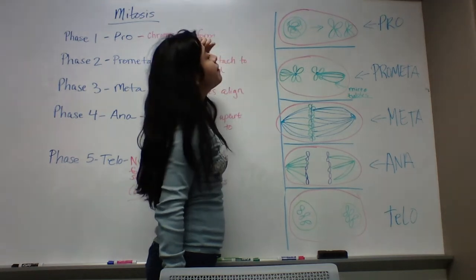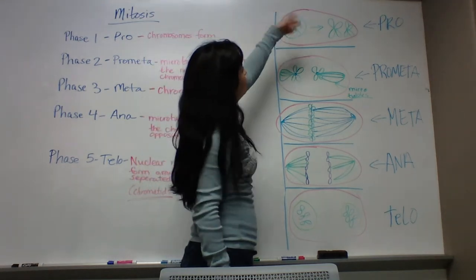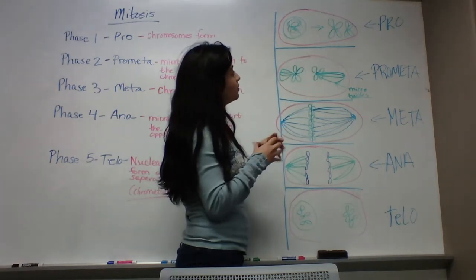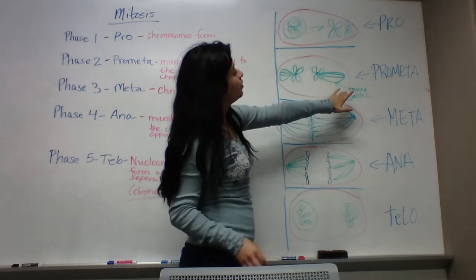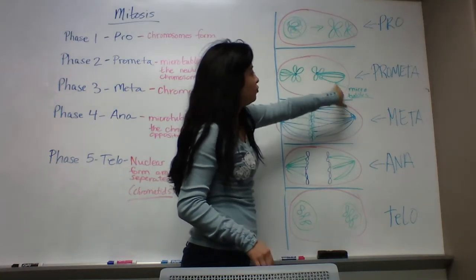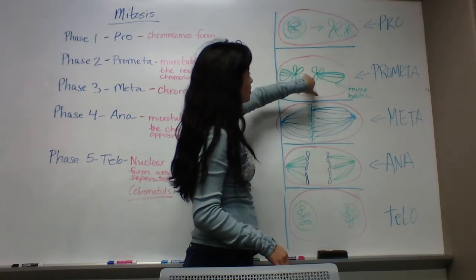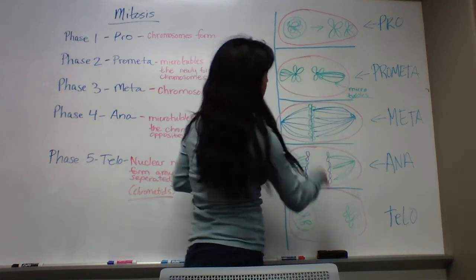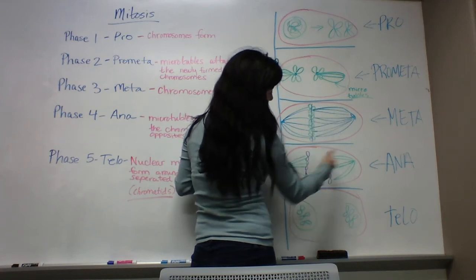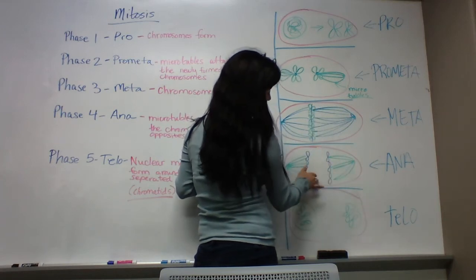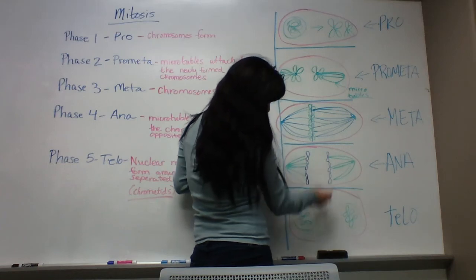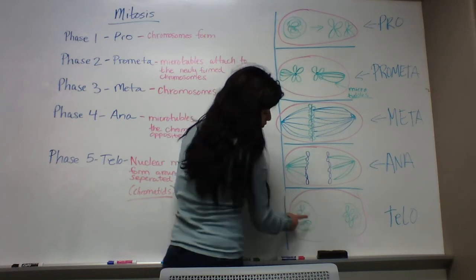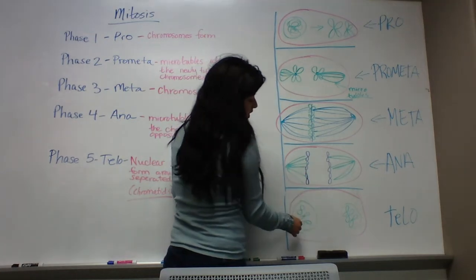So prophase, you know, the squiggly-wiggly DNA turns into neat, nice and neat, tucked away chromosomes, so the DNA is nice and neat. Prometaphase is where the microtubules attach to the centromeres that are on the chromosomes. And then they align to separate. And then in anaphase they actually do separate. That's why they aligned. And in telophase, once they're separated, the microtubules go away and nuclear membranes form around the separated chromatids.